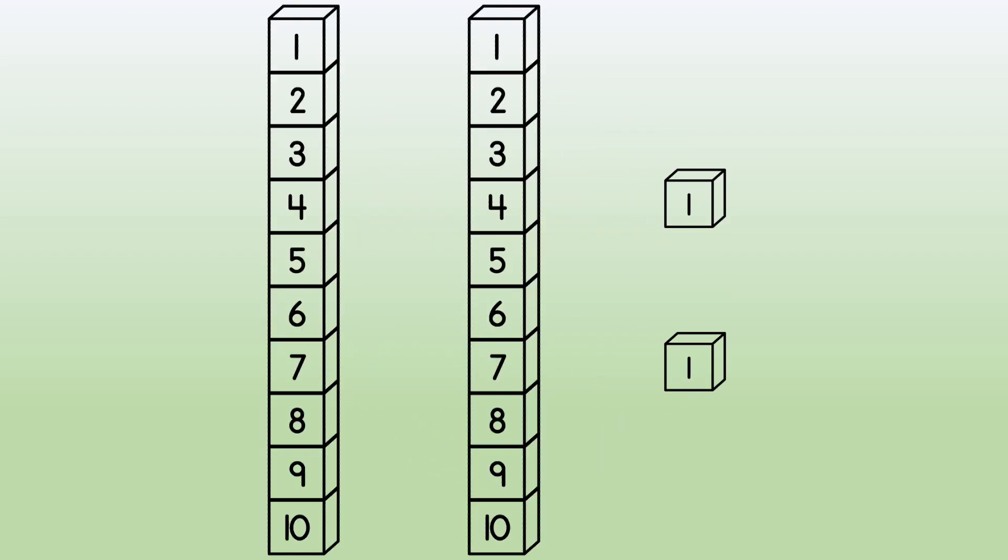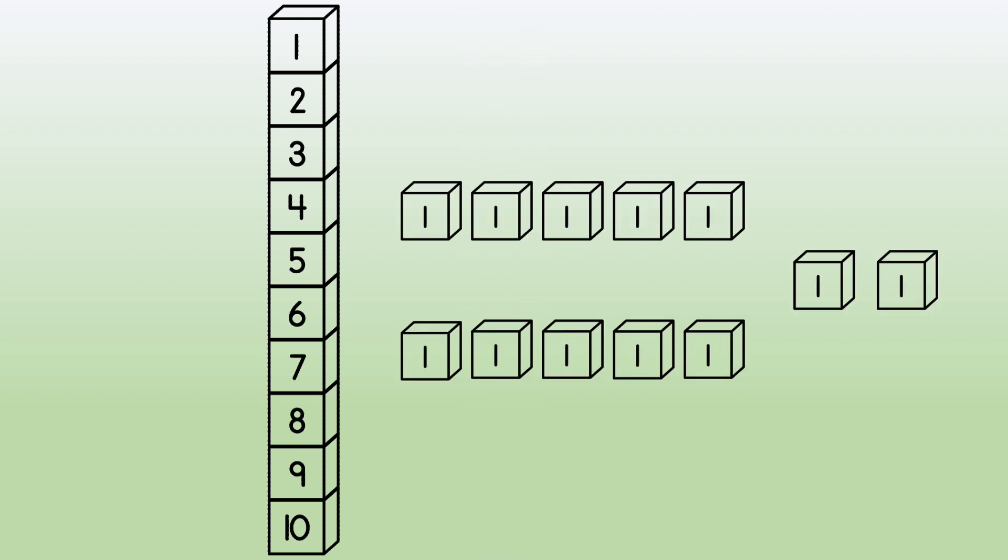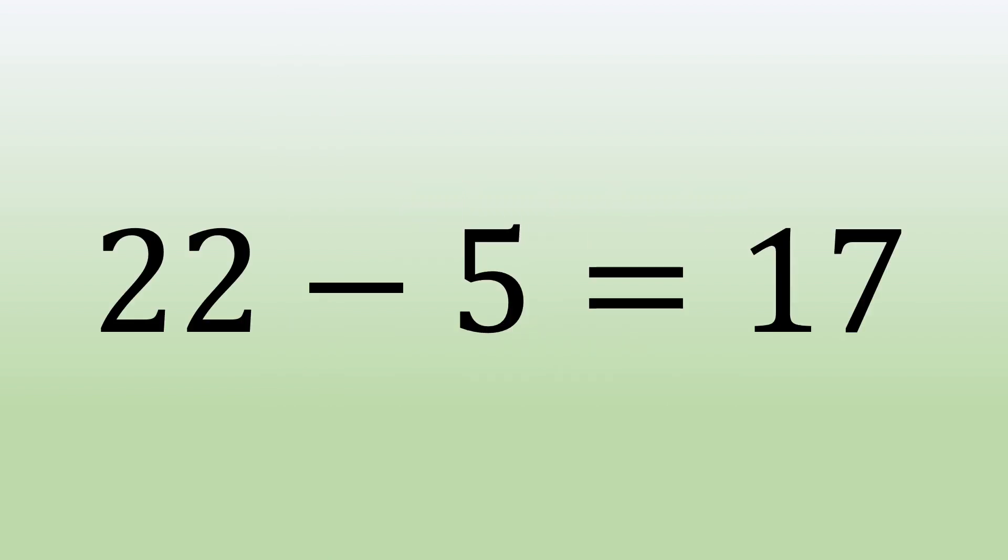We take 1 of our tens and make it into 10 ones. 1 long becomes 10 bits. Then we do our subtraction and look at what's left to see what our answer is.